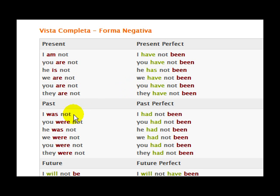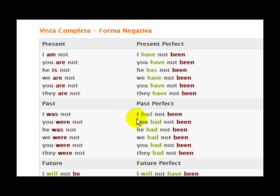Come down to the past tense negative: I was not, you were not, he was not, we were not, you were not, they were not. In the past perfect: I had not been, you had not been, he had not been, they had not been.